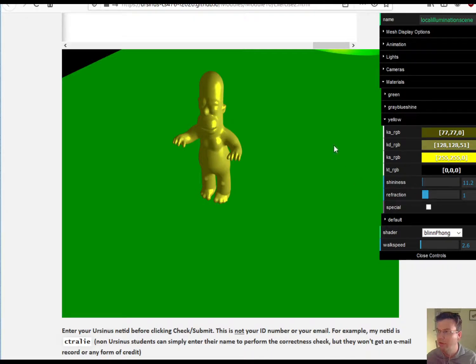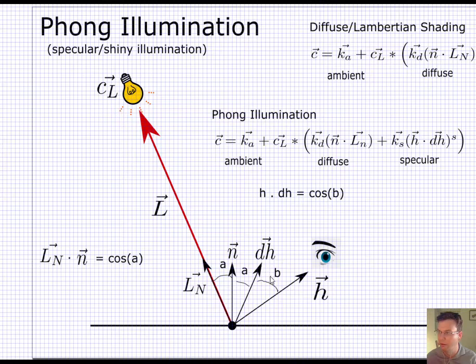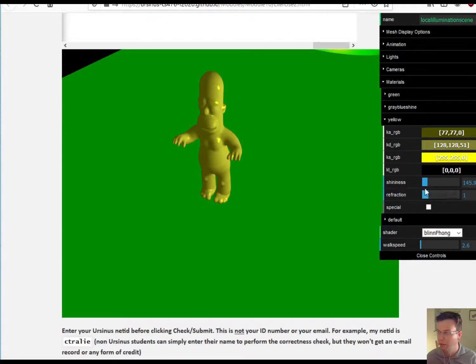So since the cosine of theta is less than one if you're not incident here, raising something less than one to a power makes it even smaller. So the larger this power is, the more it falls off. So that's the shininess part.